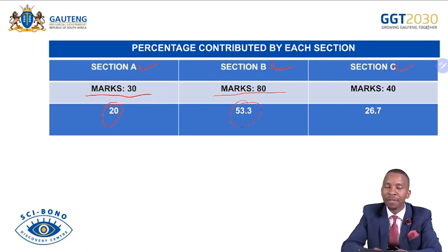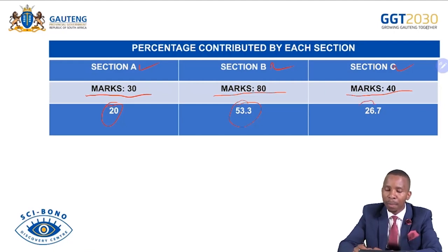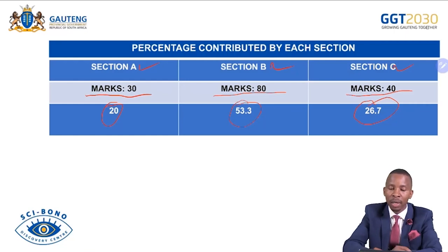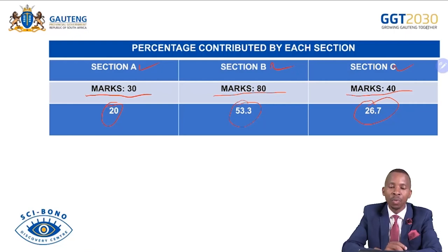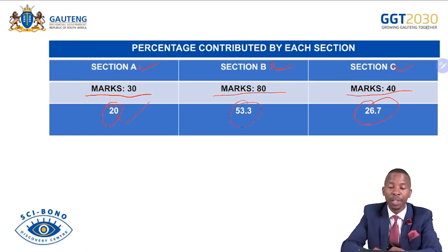All in all, this gives you 100%. Do not undermine Section A — ensure that you grab those marks, as it contributes 20%. Be a master at answering Section B, especially data response and 8-mark questions. Most of you are not getting those correct. Ensure you develop the skill — copying the extract will not give you marks.